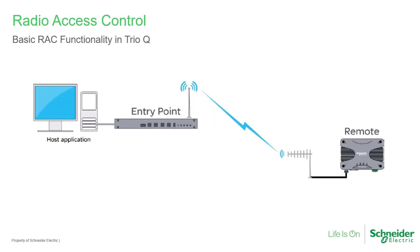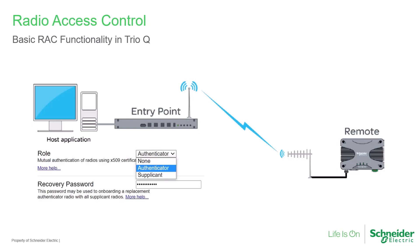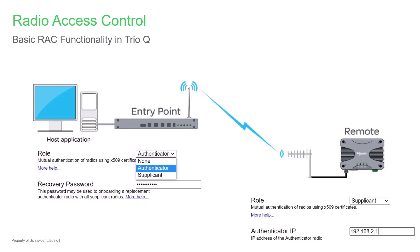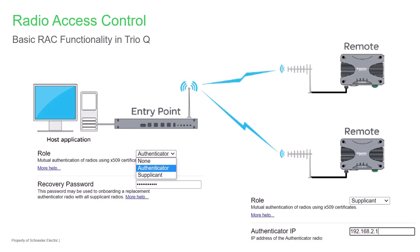In a system operating with radio access control, one radio is configured as the authenticator — typically the system's entry point radio. All other radios are configured as supplicants and must authenticate before they can send or receive data over the radio network. Additional radios are onboarded or invited to the network in a simple and secure manner. The authenticator and supplicants mutually authenticate each other using the DTLS protocol by sharing their X.509 certificates.